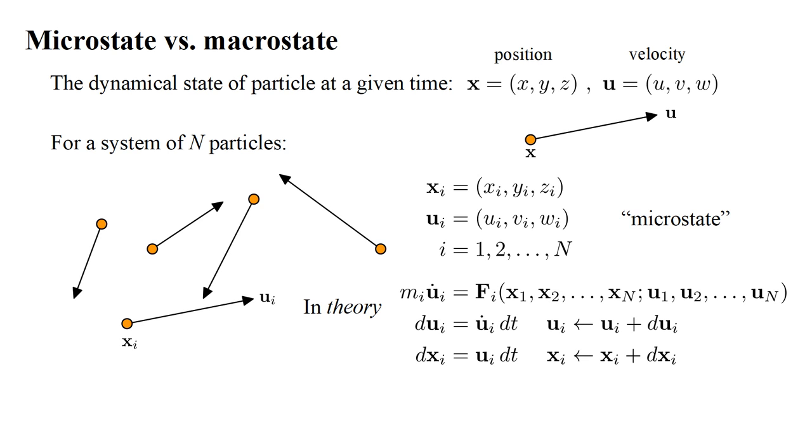We can use these increments to update all particle positions and velocities, and then repeat the process indefinitely to predict the system's microstate at any time in the future or past. This is the basic recipe of Newtonian mechanics, and it works, in theory.